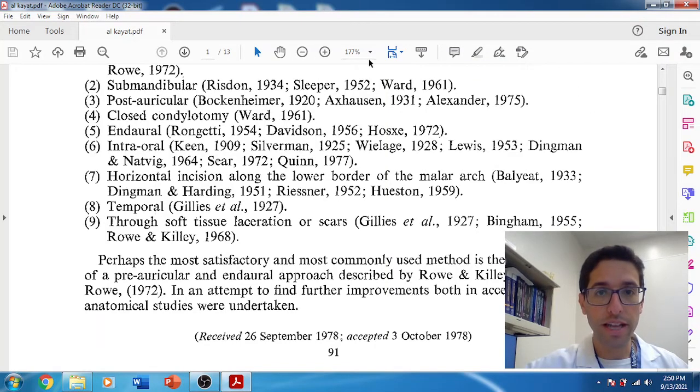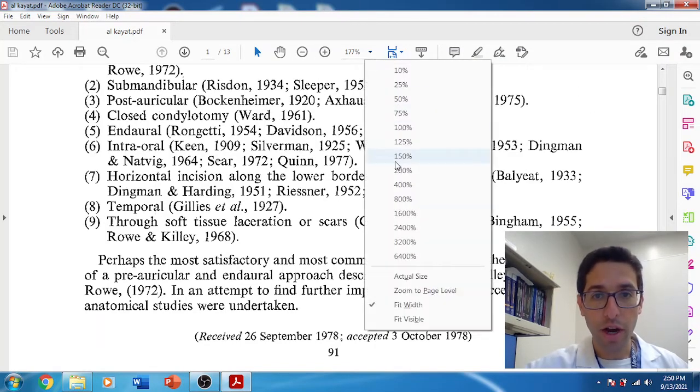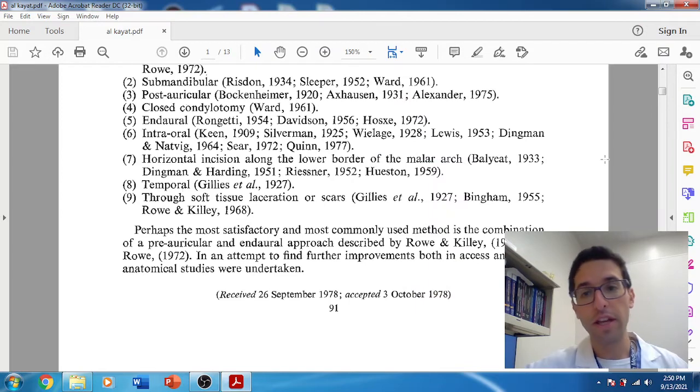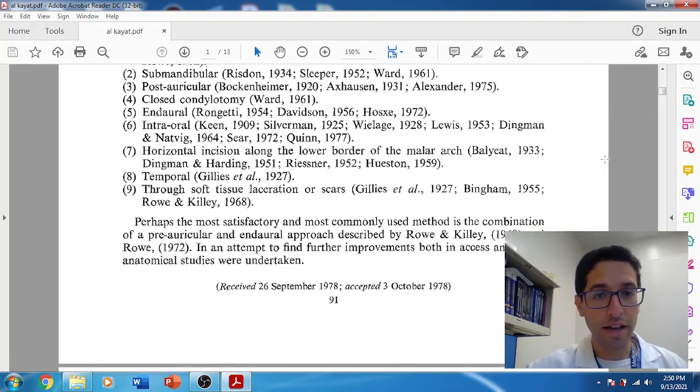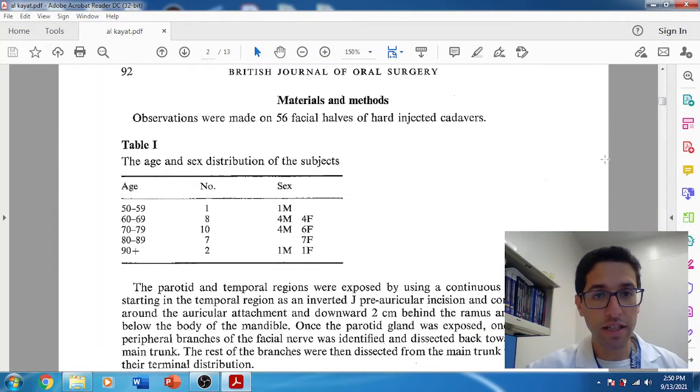And they were going to do a cadaver dissection to try to identify the facial nerve in relation to a bony landmark. And they had about 56 facial halves, so about 100 sides. And they dissected the facial nerve, and then they measured in relation to a bony landmark.